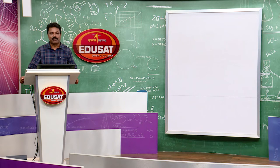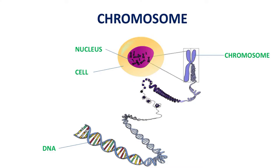Before discussing the chromosomal mechanism of sex determination, we should know what chromosomes are. Chromosomes are thread-like structures found in the nucleus, regarded as hereditary vehicles which contain genes — the hereditary units responsible for determination and inheritance of characters generation after generation. All the information of a cell is stored in its chromosomes. That is why the nucleus is called the control room or boss of the cell.